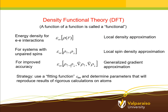Density functional theory — I'm just going to very briefly talk about the basic concepts. First of all, the name: what's a functional? A function of another function is called a functional, and the electronic energy density for the electron-electron interactions in a molecule or a solid is an example of a functional, because it depends on the charge density, which is a property of all points in space. So rho here represents the charge density, and the epsilon representing this electron-electron interaction is a function of a function, which is the charge density.